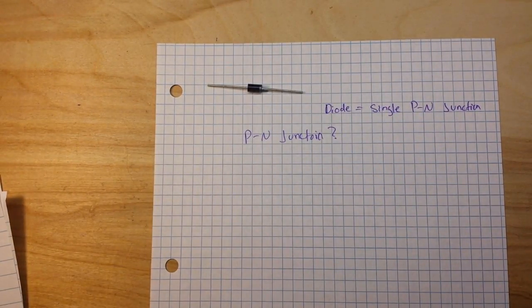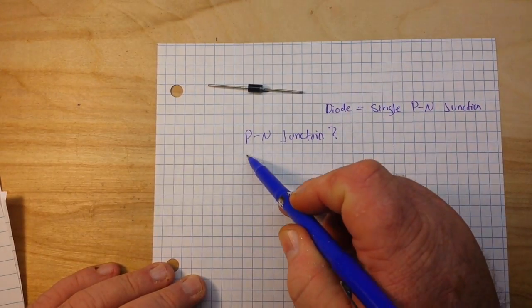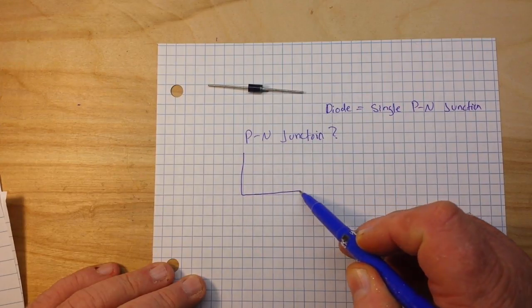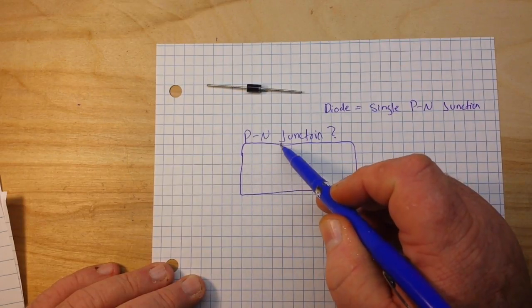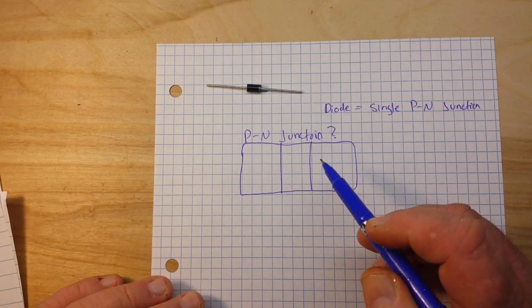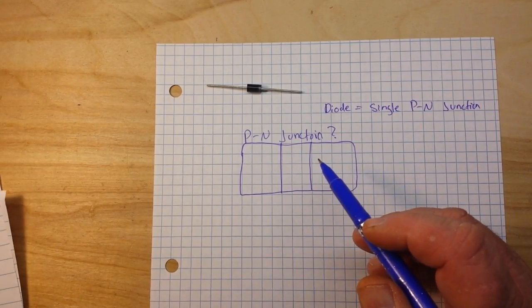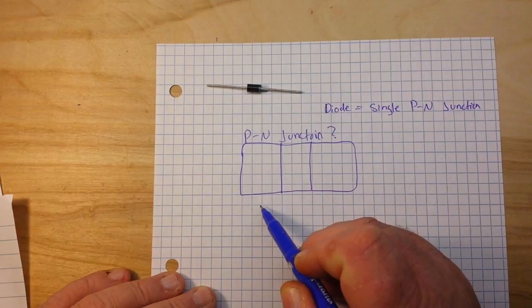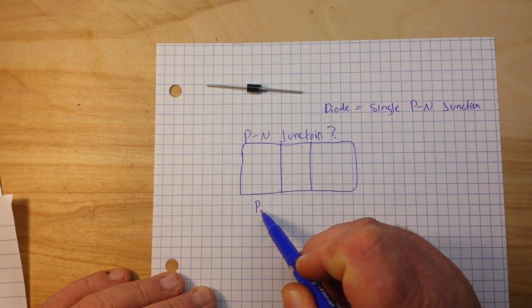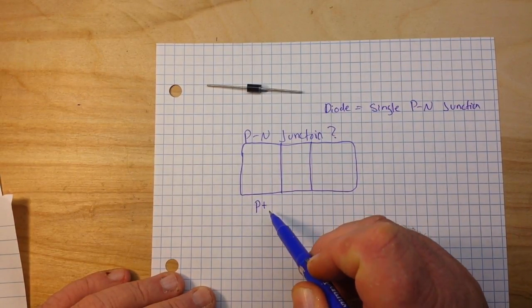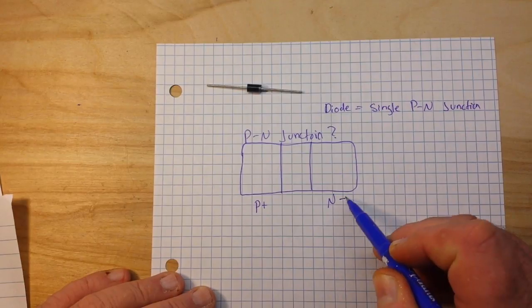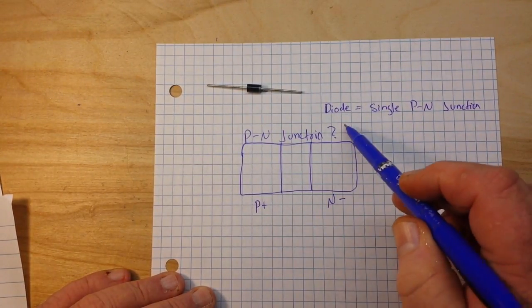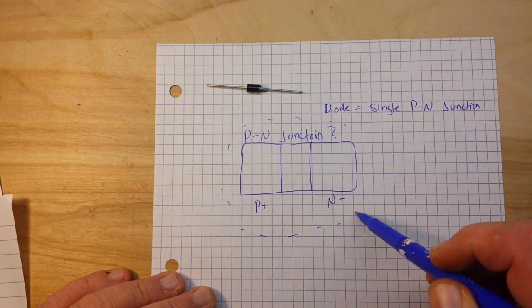Well, it is the interface between two different types of semiconductors. So if we look at it kind of like this, it's pretty simple to really get a good handle on it. So we'll call this the P region, the positively charged region. And we will call this the N region, or the negatively charged region. And this is all semiconductor material, generally silicon.